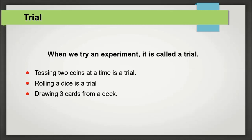From these three experiments, we learned how to calculate probability for random experiments in general. Now we will learn about the basic concepts involved in finding probability. First is a trial. When we try to perform an experiment to find the actual outcome, it is called a trial. Tossing two coins at a time is a trial. Rolling a dice is a trial. Drawing three cards from a deck is a trial.